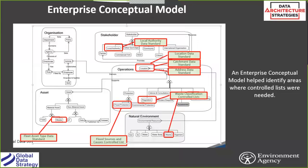You'll be pleased to know, Donna, the ones you identified — local authorities, address have been done, location is nearly done, and catchment is in progress. So we have actually used your prioritization to help us drive things forward, which has been good. Just moving back — I'll talk a little bit about creating the controlled list very briefly.